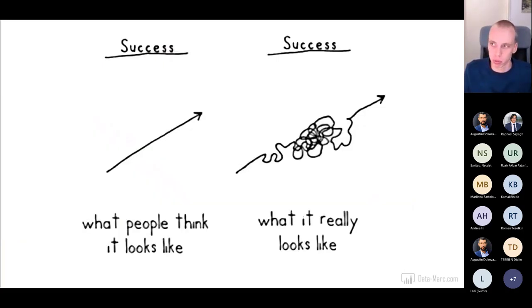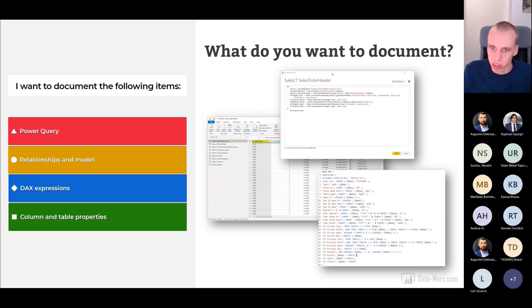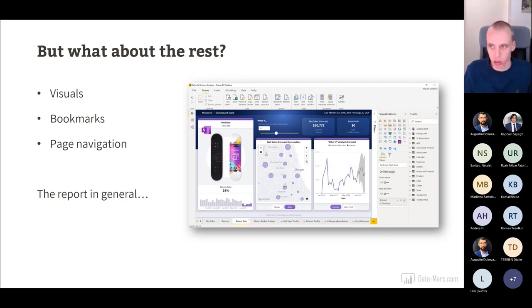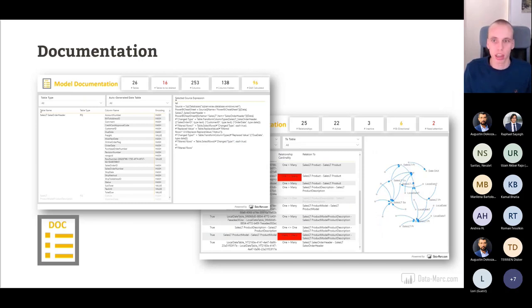I still think documentation is really important, especially for shared datasets. What I want to document includes Power Query, the model relationships, DAX expressions, column and table properties, and ideally the report itself — but unfortunately documenting the report is not possible at this moment. The external tool's access via the Tabular Object Model is limited to the data model; you cannot read anything about visuals, bookmarks, page navigations, or the report in general.